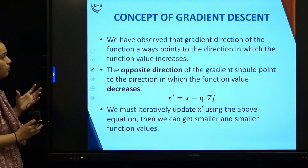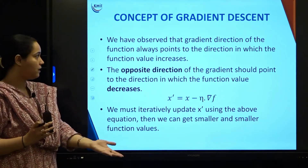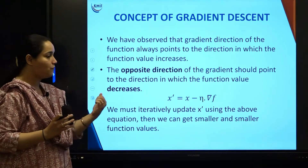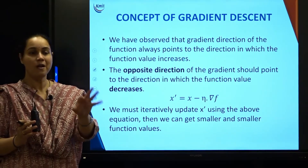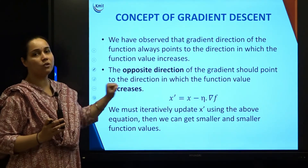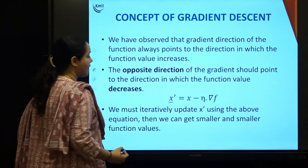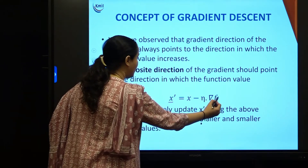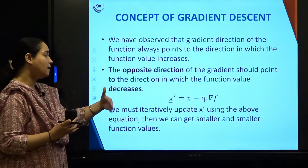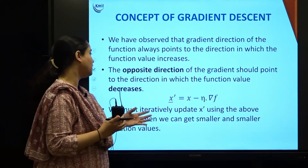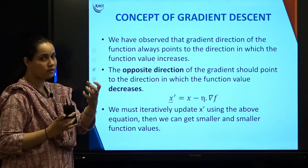For the concept of gradient descent: the gradient direction always points toward where the function value increases. If you want to minimize a loss function, you do not want to go in that direction — you go in the opposite direction, where the loss is decreasing. That is why we write x' = x − η·∇f. Instead of adding the gradient, you subtract it, going in the negative direction, updating x' = x − η·∇f until you get a smaller and smaller loss function value.